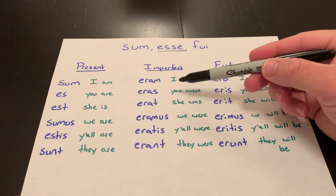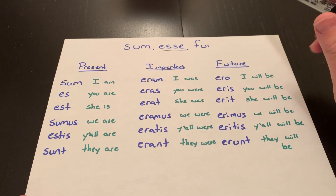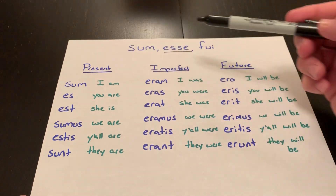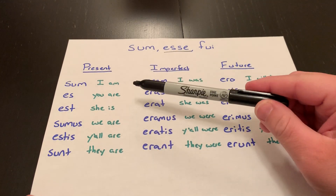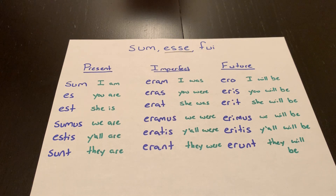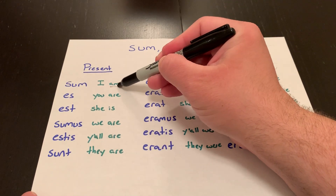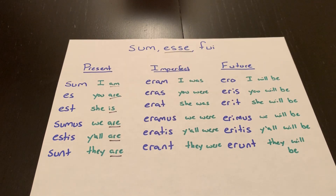You can see a pattern with ERA and ERI, but memorizing these forms is going to be the best approach. The present tense: SUM, ES, EST, SUMUS, ESTIS, SUNT. That translates to: I am, you are, he or she is, we are, y'all are, they are. One important thing to remember is to include the actual verb 'to be' — am, is, are. SUM doesn't just mean 'I'; it means 'I am.' You can test your translation by trying to put an adjective after it: 'I am happy.'